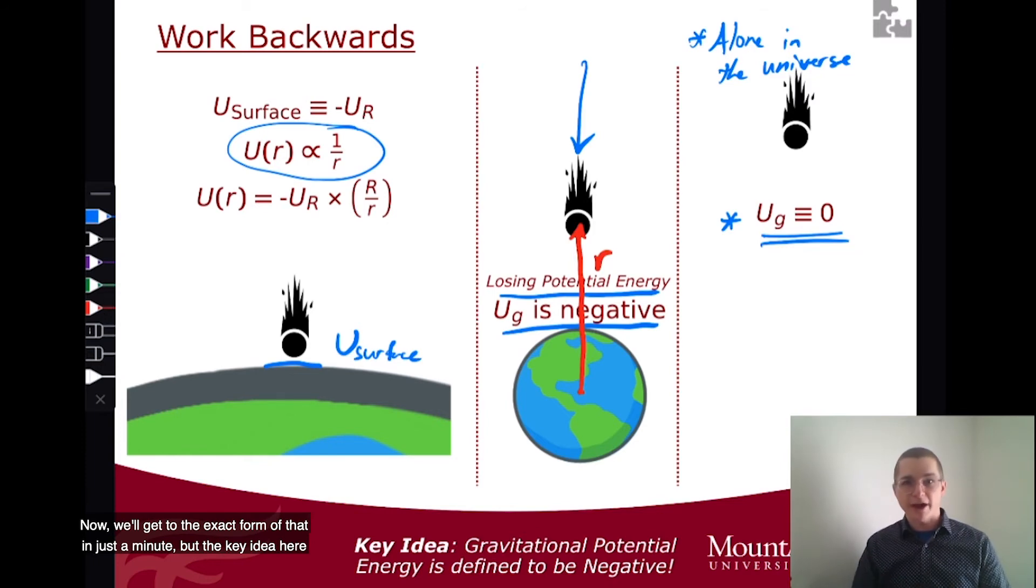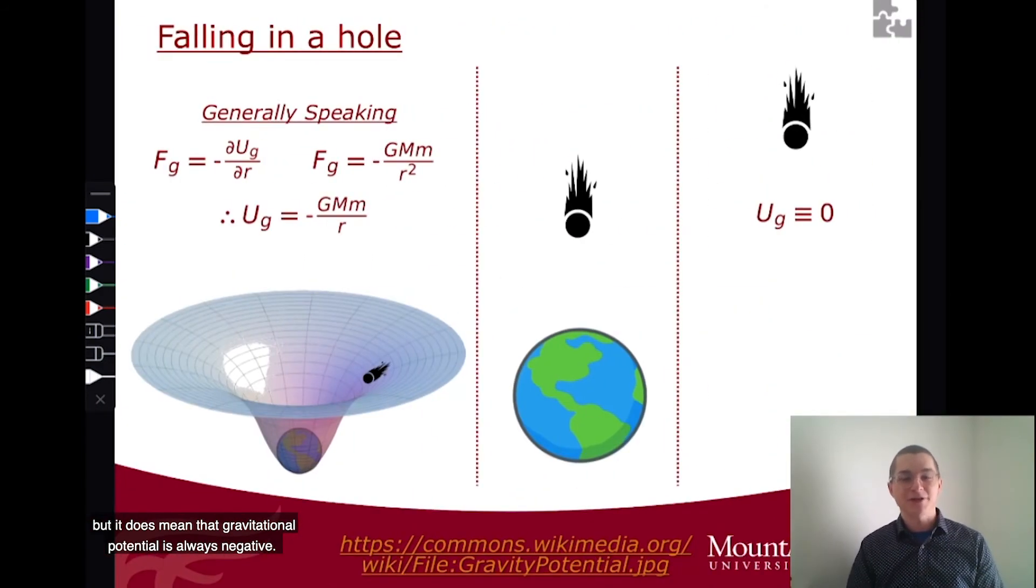Now, we'll get to the exact form of that in just a minute. But the key idea here is that our gravitational potential energy is always going to be negative. That doesn't mean we can't get a positive change by going less negative, but it does mean that gravitational potential is always negative.